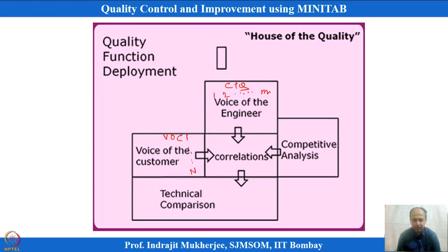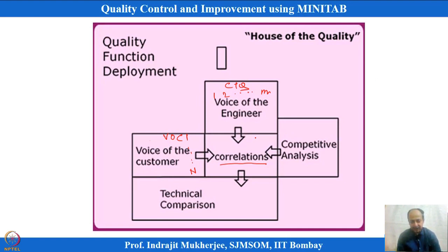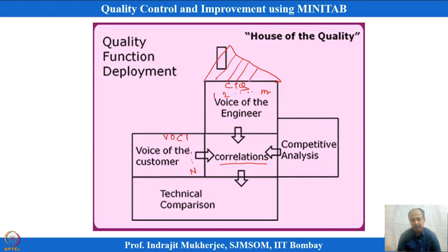These two boxes show the CTQs and this box shows the VOC. The correlation between VOC and CTQs is shown in the relationship matrix. One voice can be addressed by a CTQ, and the relationship can be strong, medium, or weak.